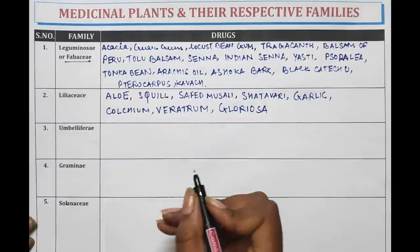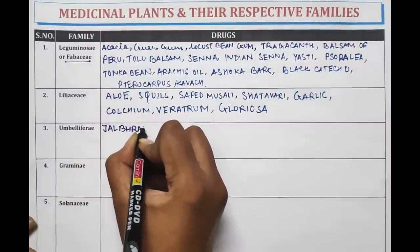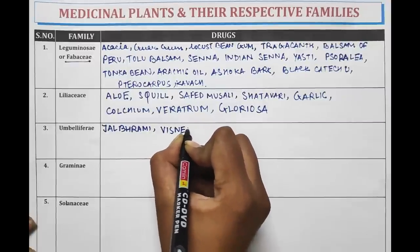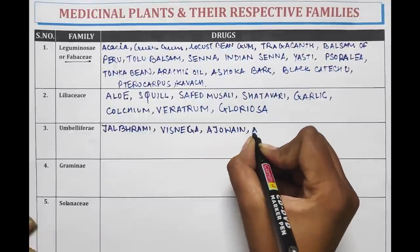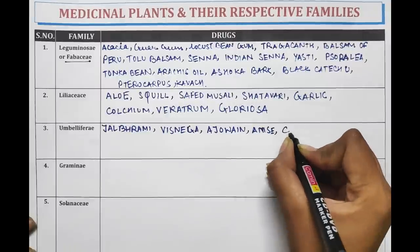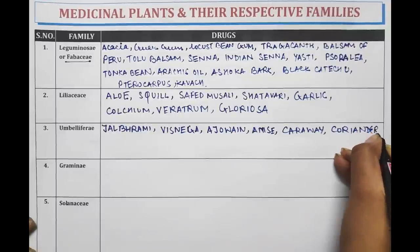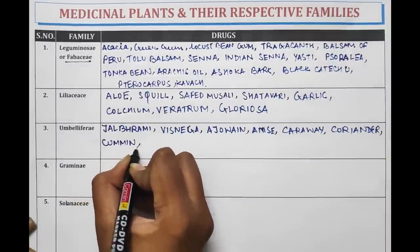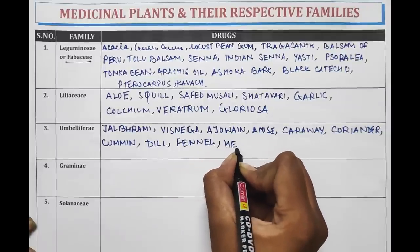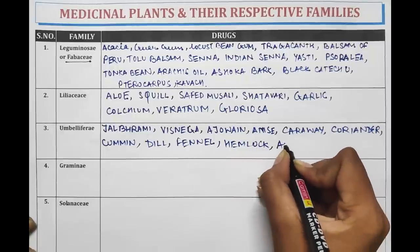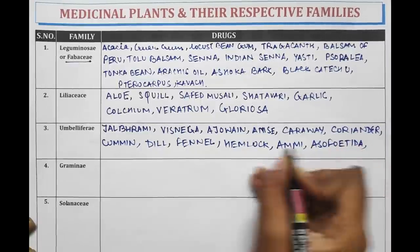Next family is Umbelliferae (Apiaceae). A number of drugs belong to this family: Jalbrambhi, Visnaga, Ajwain, Anise, Caraway, Coriander, Cumin, Dill, Fennel, Hemlock, Ammi, Asafoetida, and Celery.